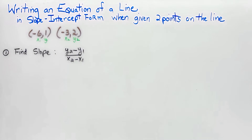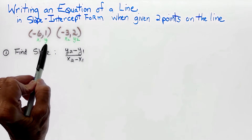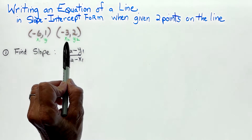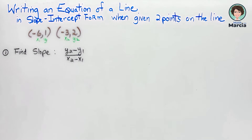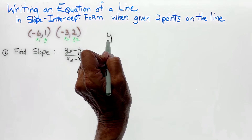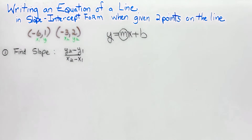This lesson is writing an equation of a line in slope-intercept form when given two points. Our two points are negative 6 and 1, labeled x1, y1, and negative 3 and 2, labeled x2, y2. To write the equation y equals mx plus b, we must find the slope and the y-intercept.